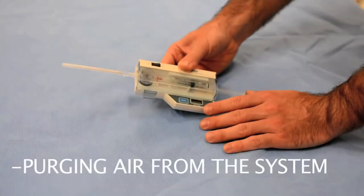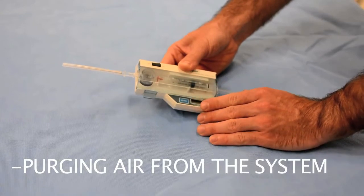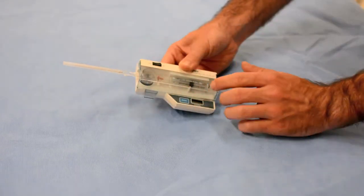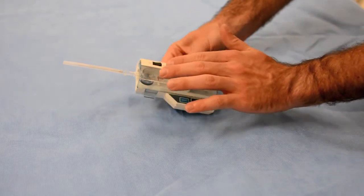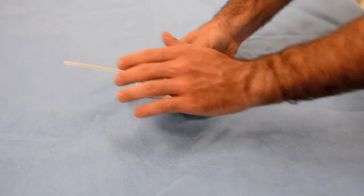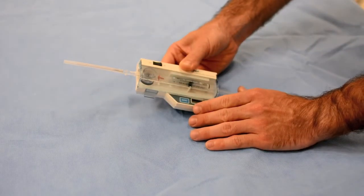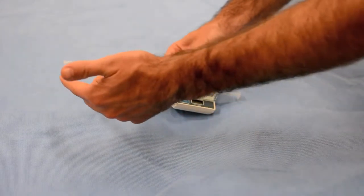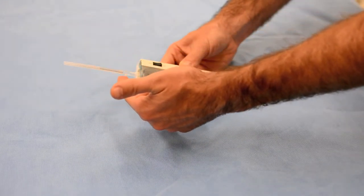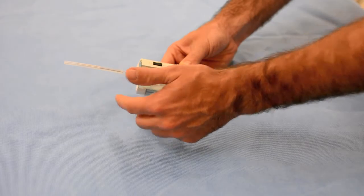The next step is purging the air from the pressure sensing system. This will be done by depressing the syringe at a 45 degree angle and allowing all the air bubbles to come out of the pressure coupler and the syringe. Avoid saline tracking back down along the syringe into the sensor.